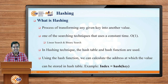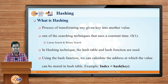In the hashing technique, the hash table and hash functions are used. Whenever we are storing the key, the storage inside which the key is stored is called the hash table, and the function which transforms the key into the value is called the hash function. Using the hash function we can calculate the address — called the index — at which the value will be stored inside the hash table. The index is calculated as: index = hash_function(key).